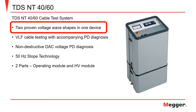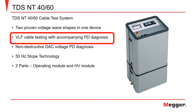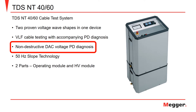The MAGR TDSNT has the ability to test with two proven wave shapes in just one device. These are the cosine rectangular or damped AC waveforms. The TDSNT can be used to perform VLF cable testing and partial discharge measurements. The standard compliant VLF cable test uses the cosine rectangular waveform, while damped alternating current voltage is applied for voltage discharge testing.